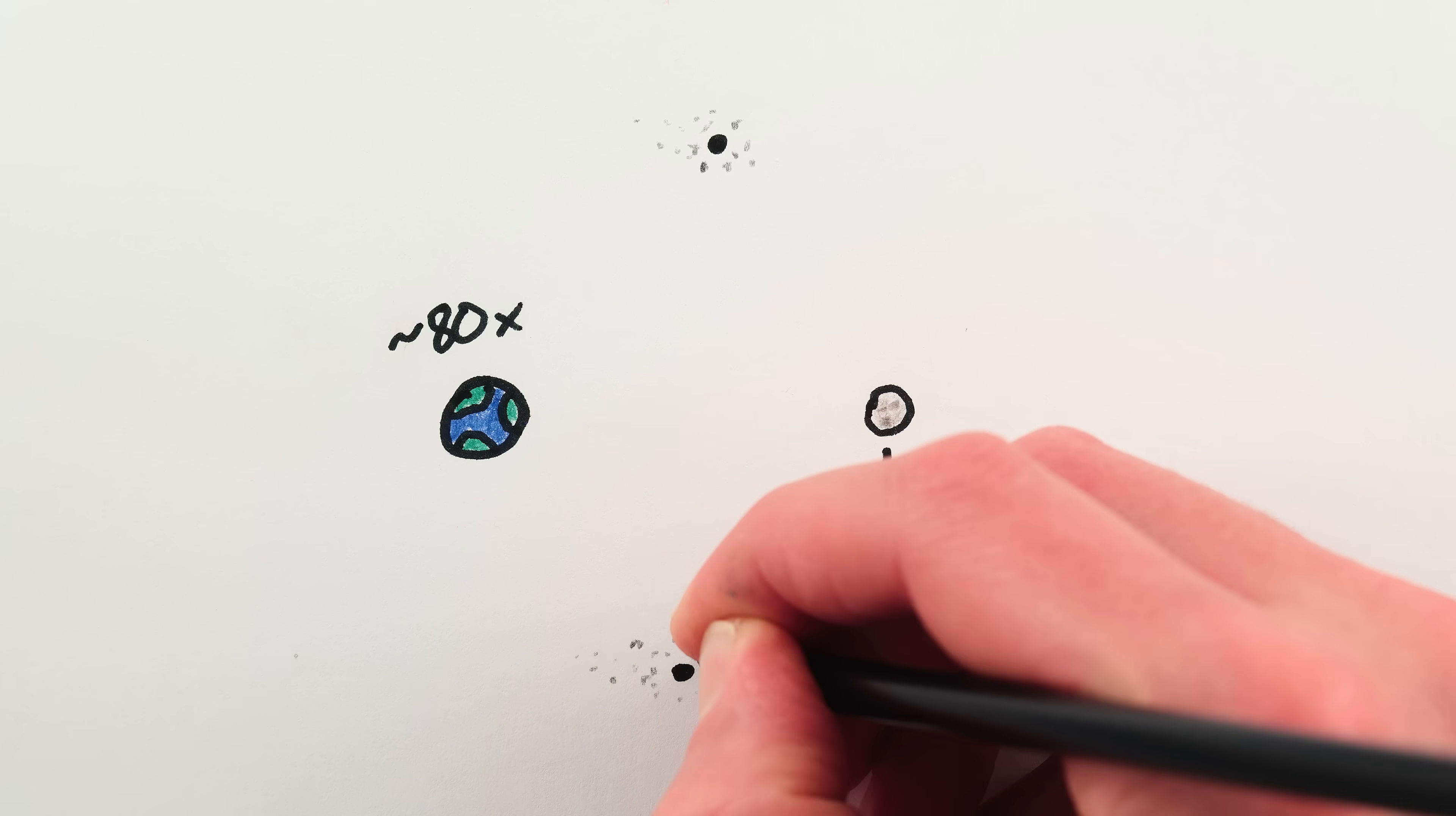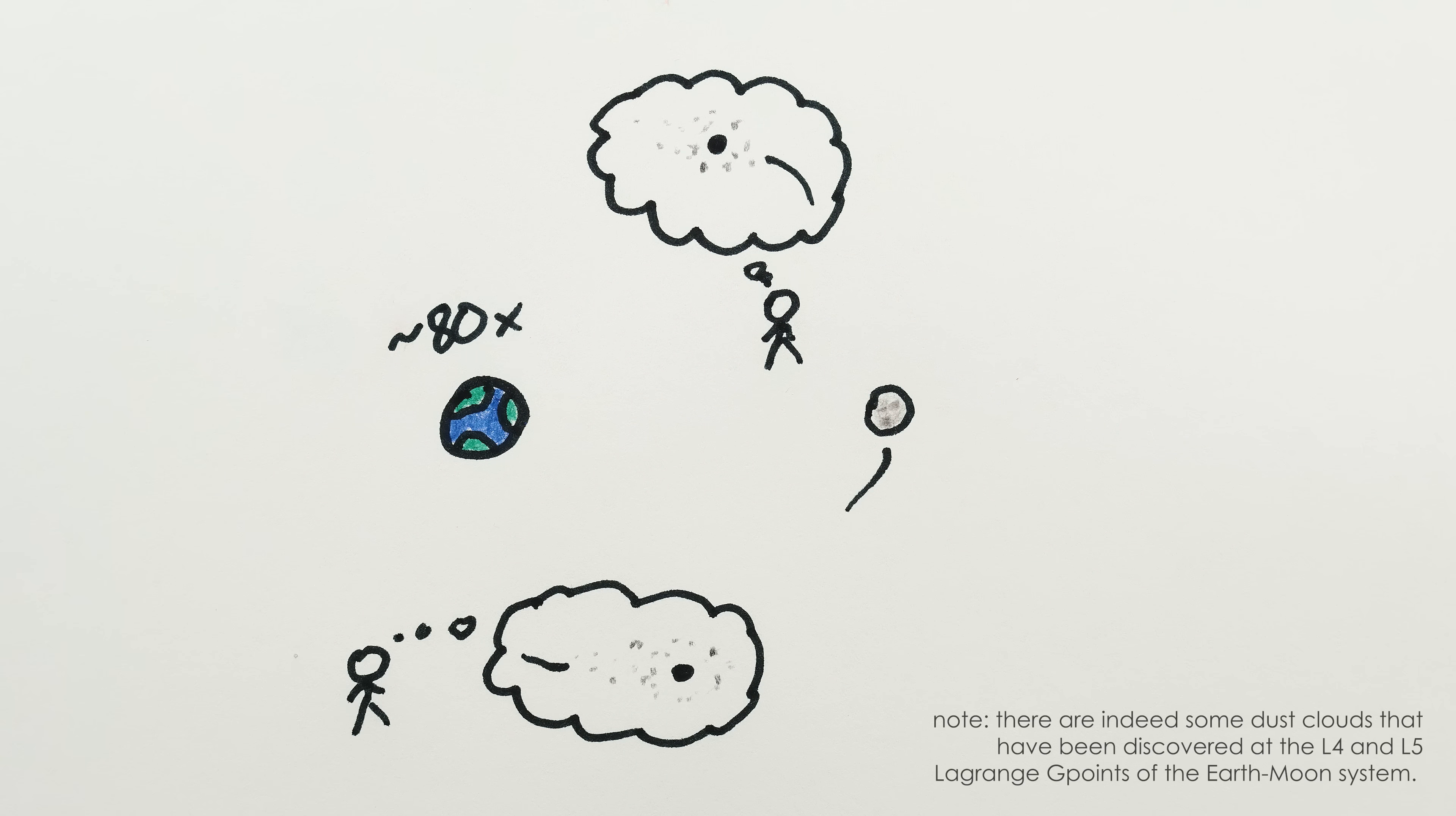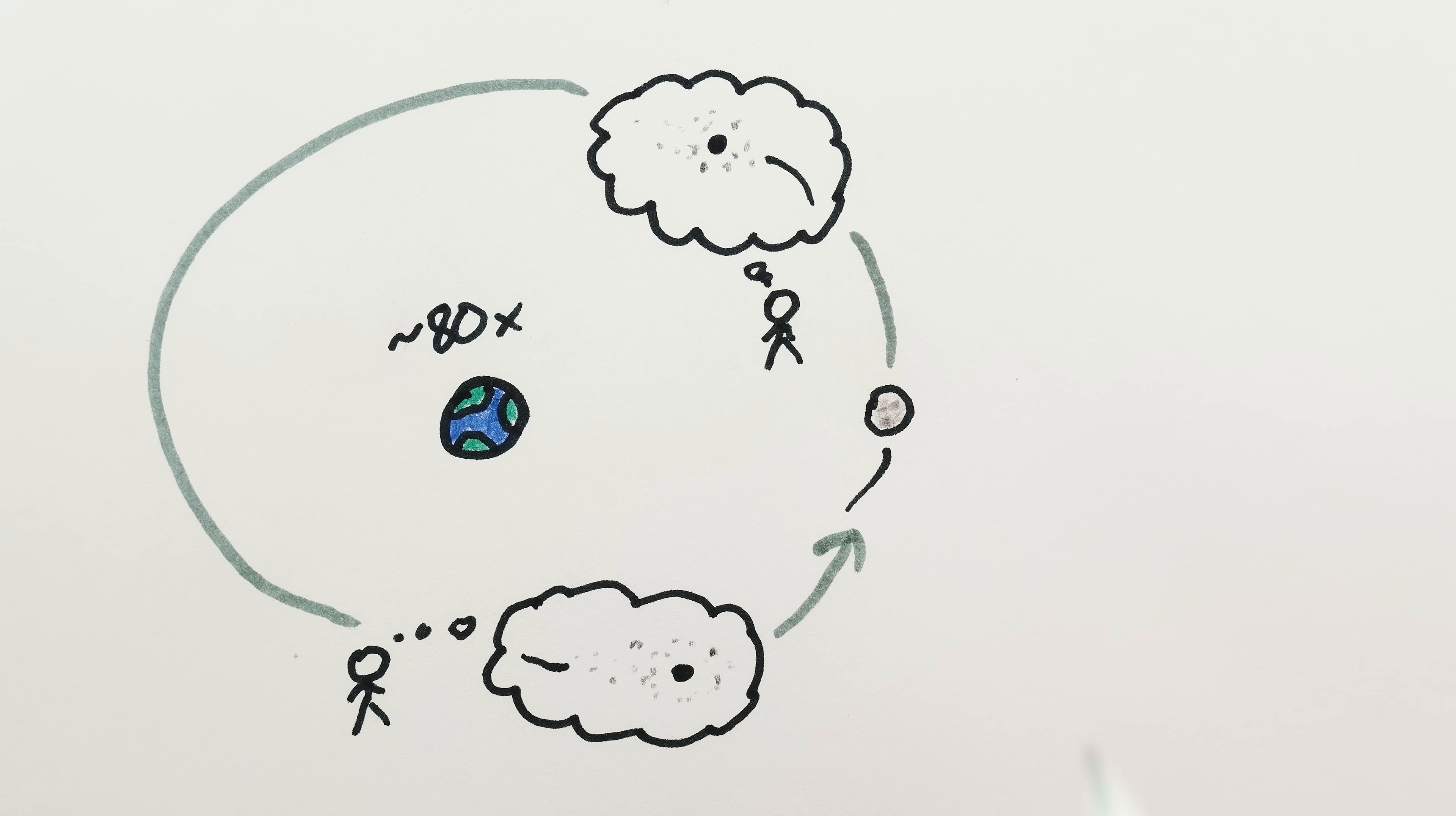And what does the Trojan test say about our moon? Well, the earth is about 80 times heavier than the moon, well above the Trojan test cutoff, which means the moon can in principle have Trojan asteroids, even though we haven't discovered any yet. Therefore, according to the Trojan test, the moon is indeed orbiting the earth. That is, the moon is a moon.